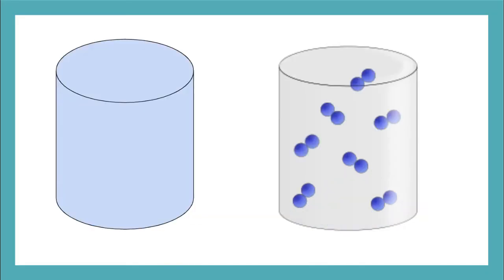Gases are able to change their shape and their volume because the atoms and molecules can move freely. Particles in a gas can vibrate, but they also move at really high speeds. There's a lot of free space between gas particles, and that's why it's easy to compress a gas.